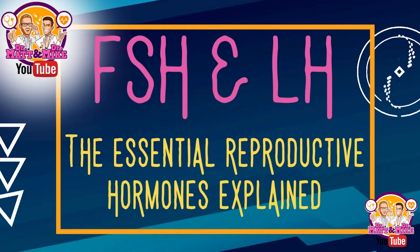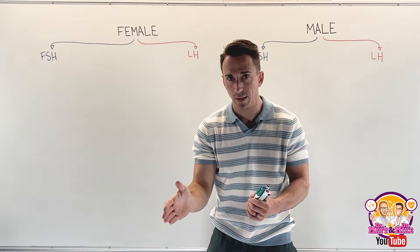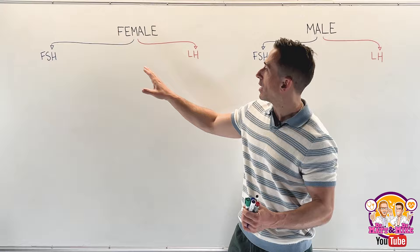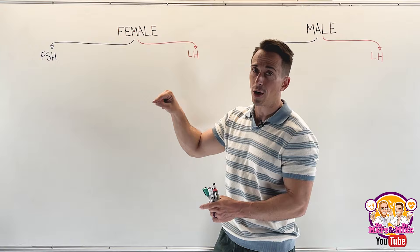To begin, we need to understand that FSH and LH cumulatively are termed the gonadotropins. If we break that word up, 'gonado' is the prefix and 'tropins' is the suffix. Gonadotropins tells you that these hormones are traveling to the gonads to have their function — the ovaries in the female and the testes in the male. The suffix 'tropin' tells you that when these hormones get to the gonads, they're going to tell them to release more hormones.